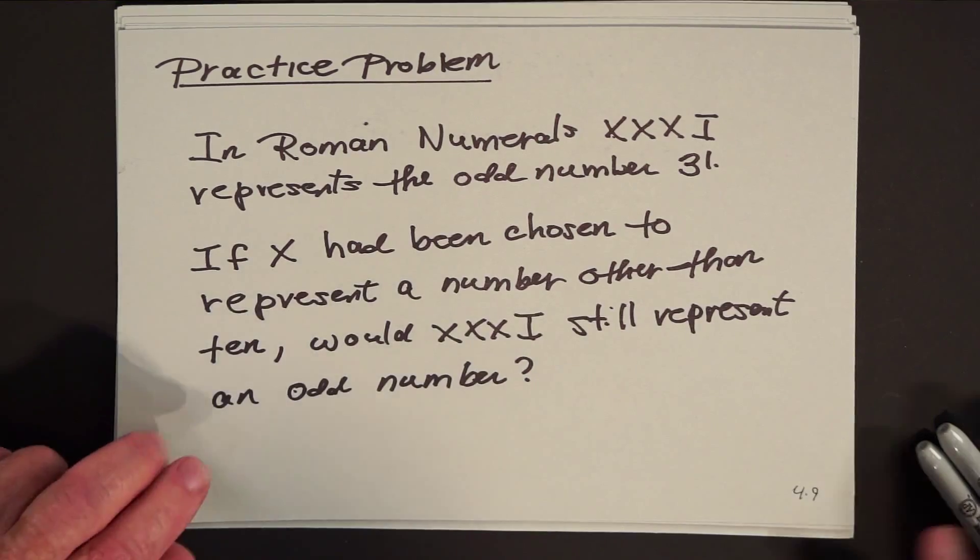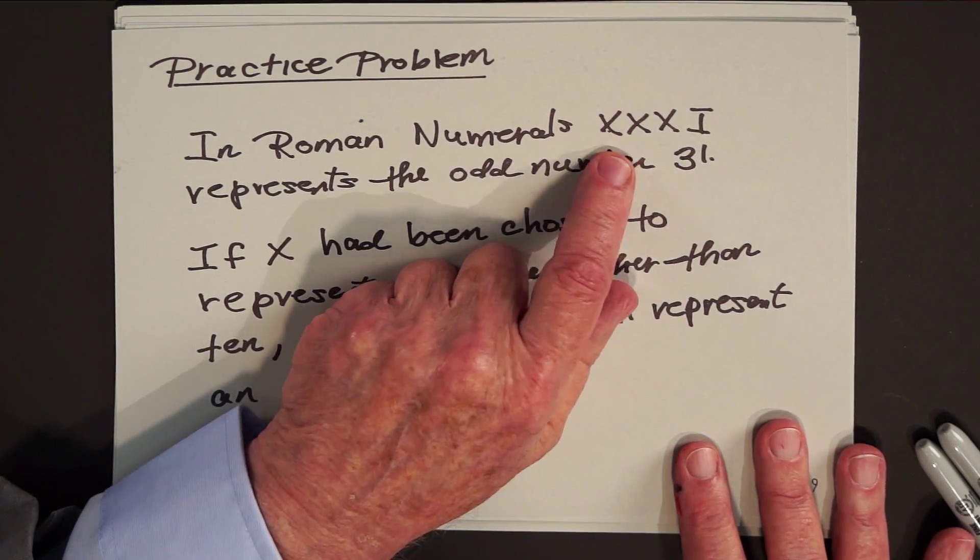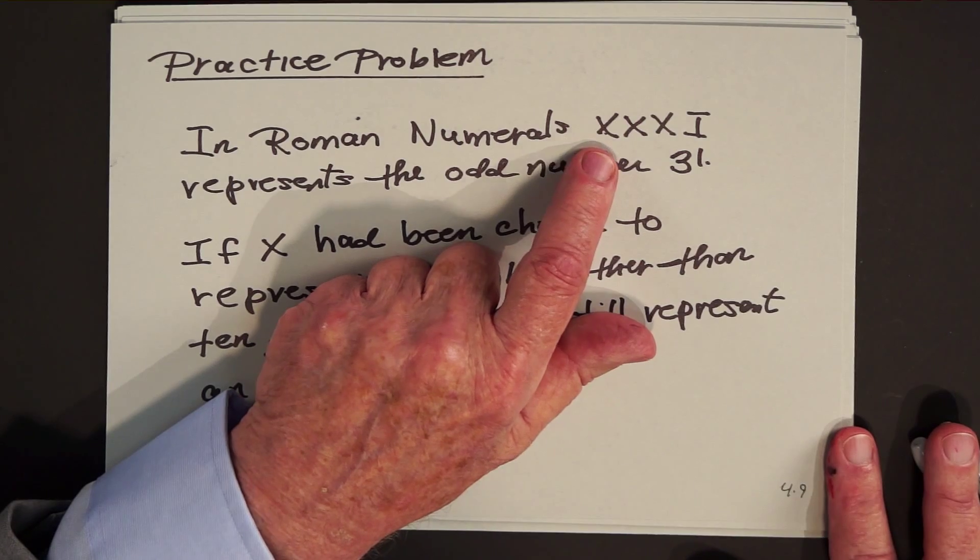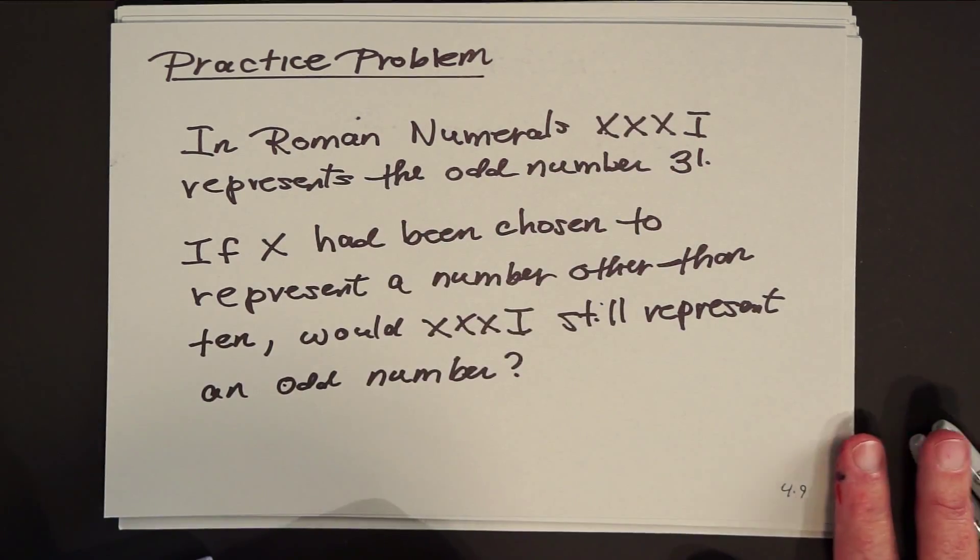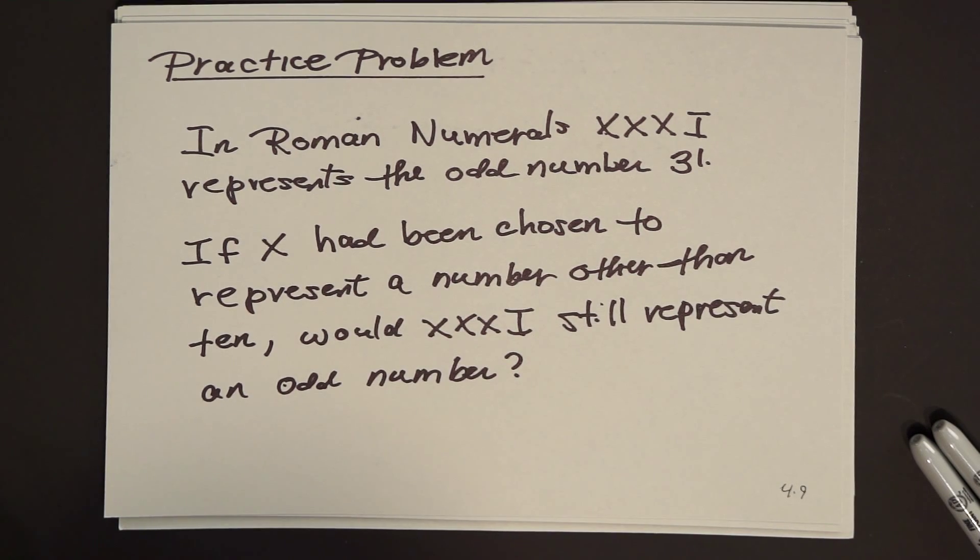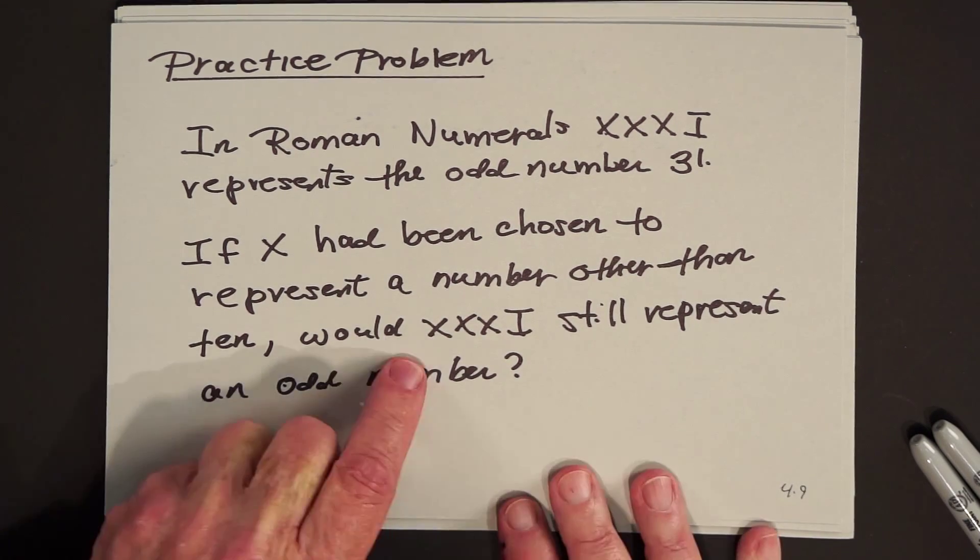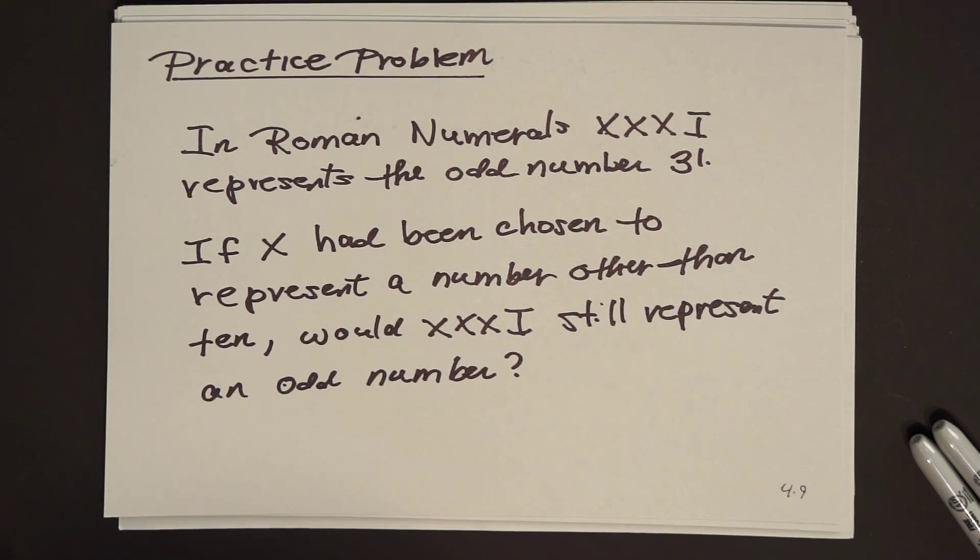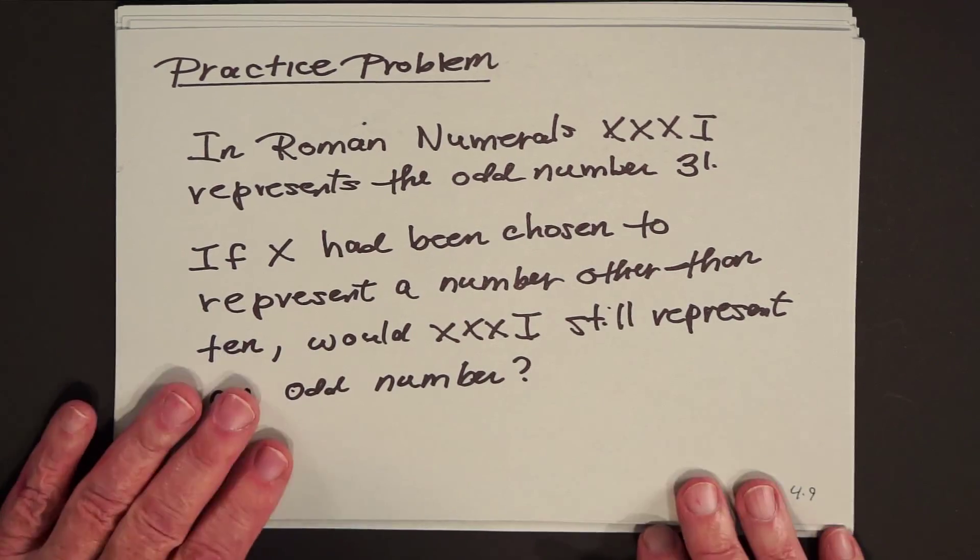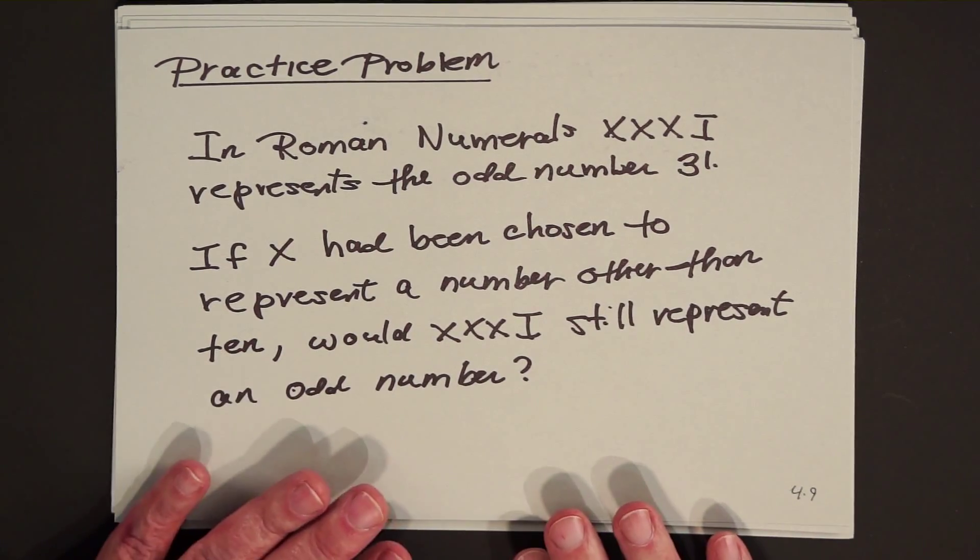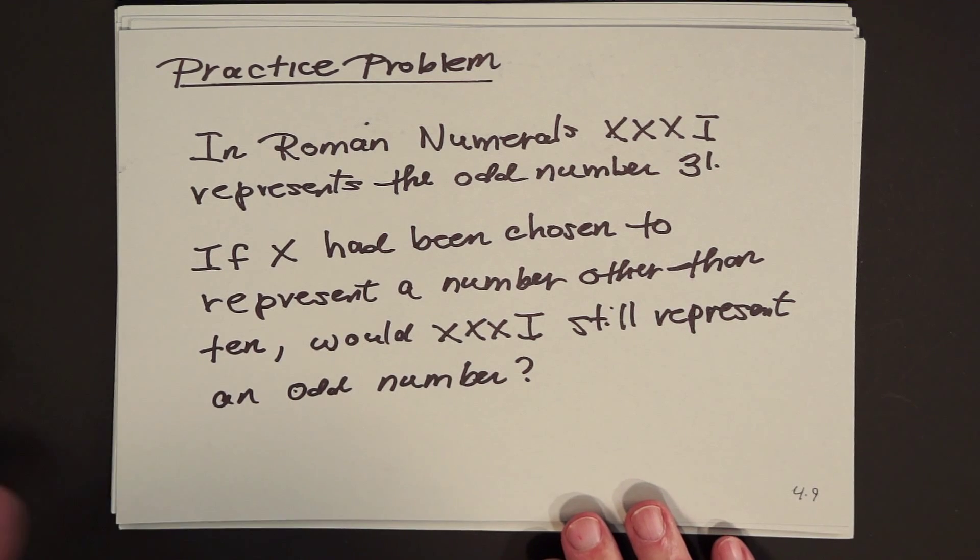And again, this lecture has gone on, I think, long enough. It gives you enough to think about. I thought we should go to our closing problem right now, our practice problem. In Roman numerals, XXXI represents the odd number 31. See? 10 plus 10 plus 10 plus 1. If X had been chosen to represent a number other than 10, would XXXI still represent an odd number? You may think that's kind of a silly question, but it does lead to something that's quite interesting that I'll mention in our solution. But for now, pause the video, tackle the problem, see what answer you come up with, and then come back and watch what I did.